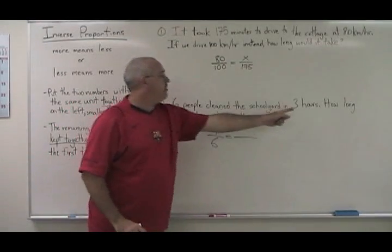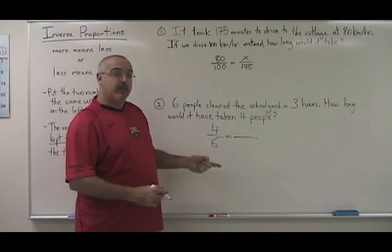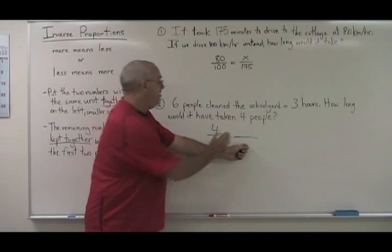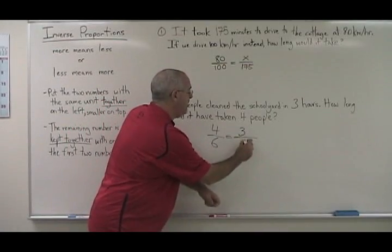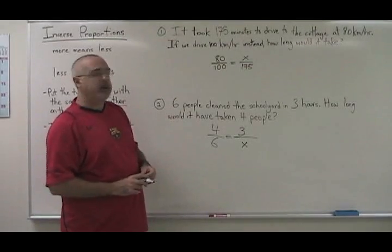Then we look for the other number, and we see three hours goes with six people. So because this is an inverse proportion, we do not put the three on the bottom together with the six. We put it on top instead, and we put x in the last remaining place. Let's solve these questions and see what the answers are.